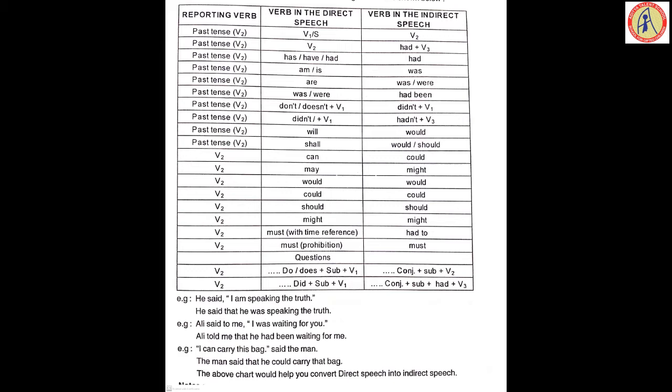'Said to' changes into 'told'; 'said' remains as 'said'. 'I can carry this bag,' said the man. The speaker may be given at the end or beginning — always write 'the man said' at the beginning in indirect speech. 'Can' changes to 'could'. 'I' refers to the man, so: 'The man said that he could carry that bag.' The above chart would help you convert direct speech to indirect — please go through it carefully.